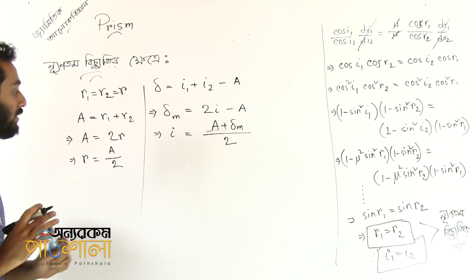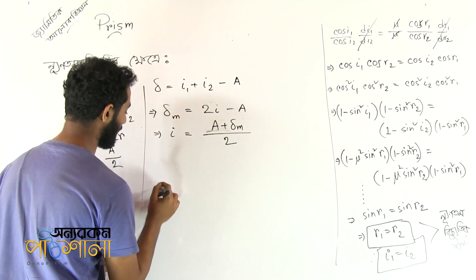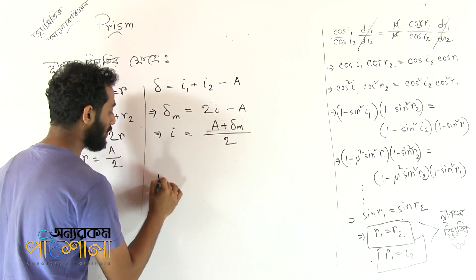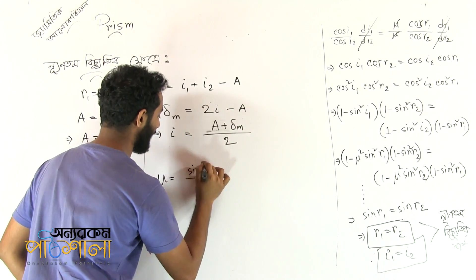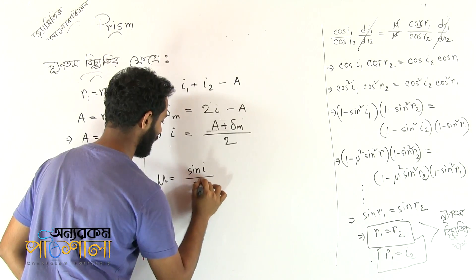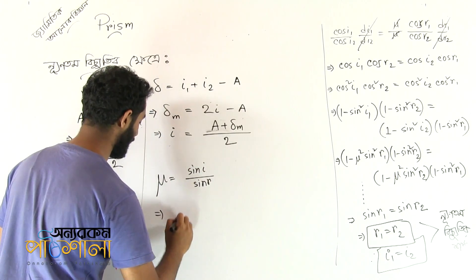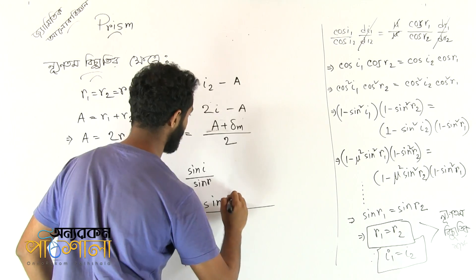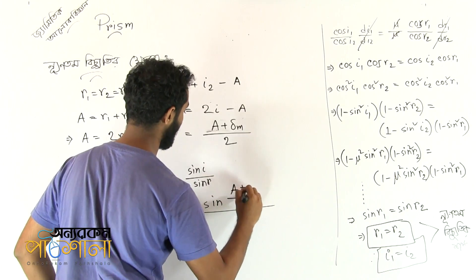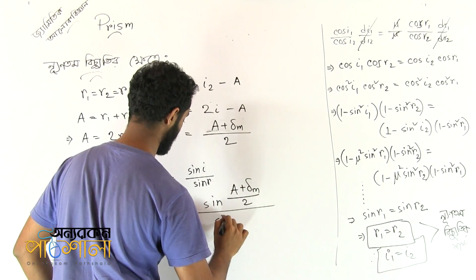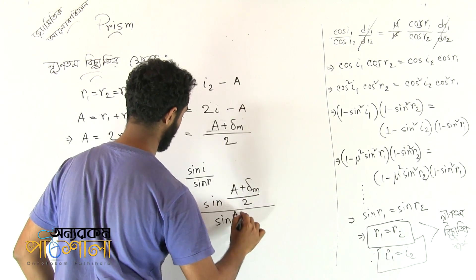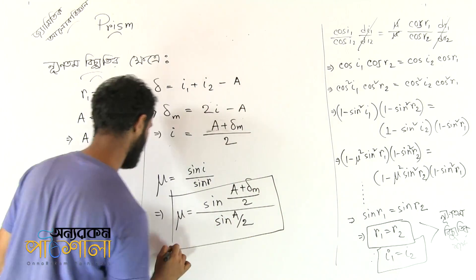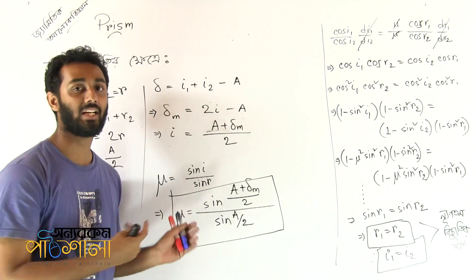So the formula is: sin(i) equals sin of (A plus δm) divided by 2, and r equals A by 2, so sin(r) equals sin(A/2). Therefore μ equals sin(i) by sin(r). This is the minimum deviation formula, and it is very important.